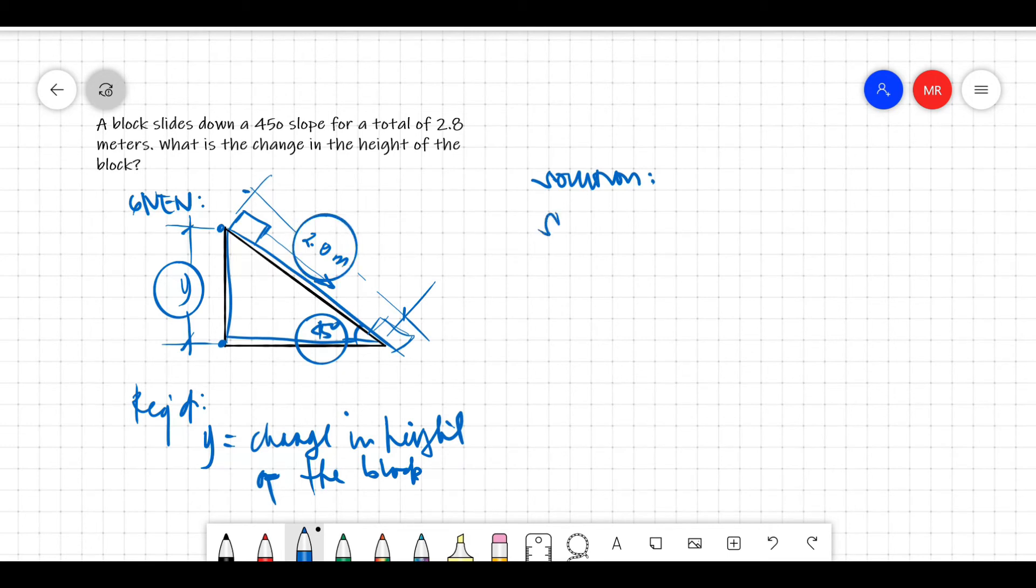We will have sine 45 degrees is equal to the opposite side, which is Y, over the hypotenuse 2.8 meters. By cross multiplication, we will have Y be equal to 2.8 meters times sine 45 degrees.